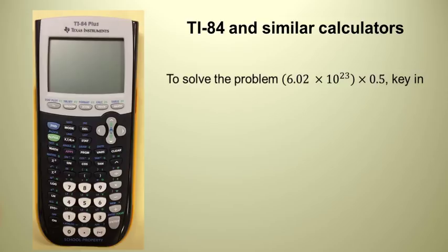6.02 times 10 to the 23rd, which is a scientific notation number, times 0.5. And so let's look at the keystrokes that you actually have to type in. So if you have a TI-84, actually turn your calculator on and follow along with this. Do this problem to make sure you can get the right answer. So first thing you want to hit is the 6.02.